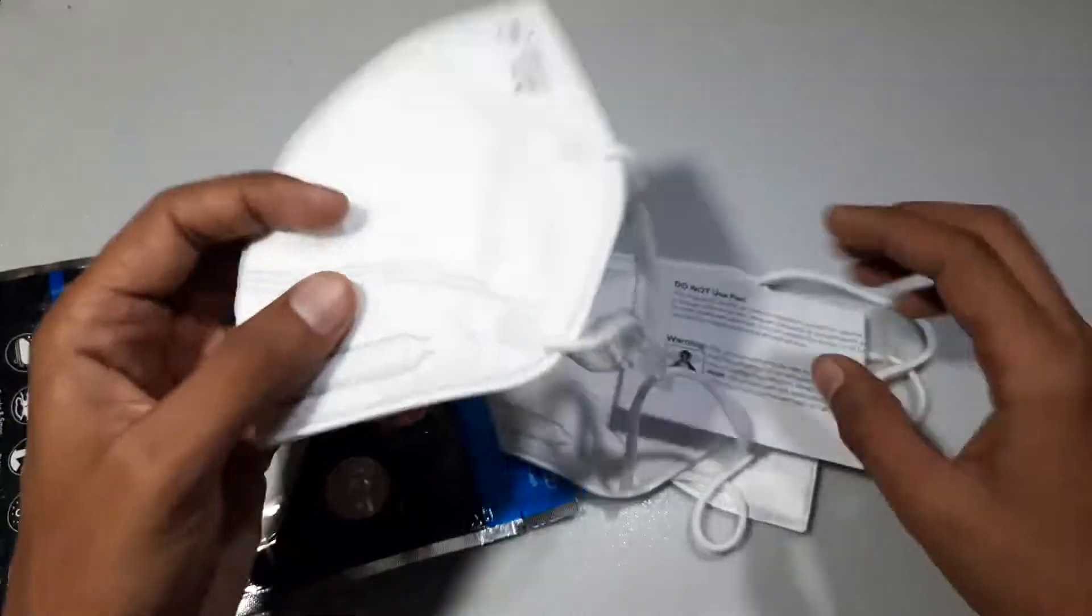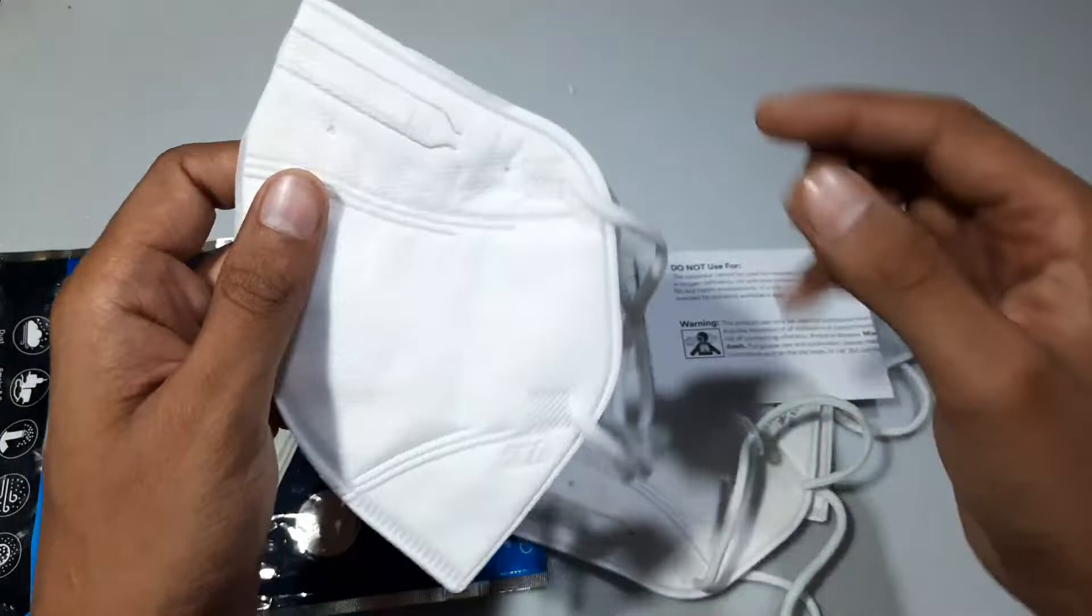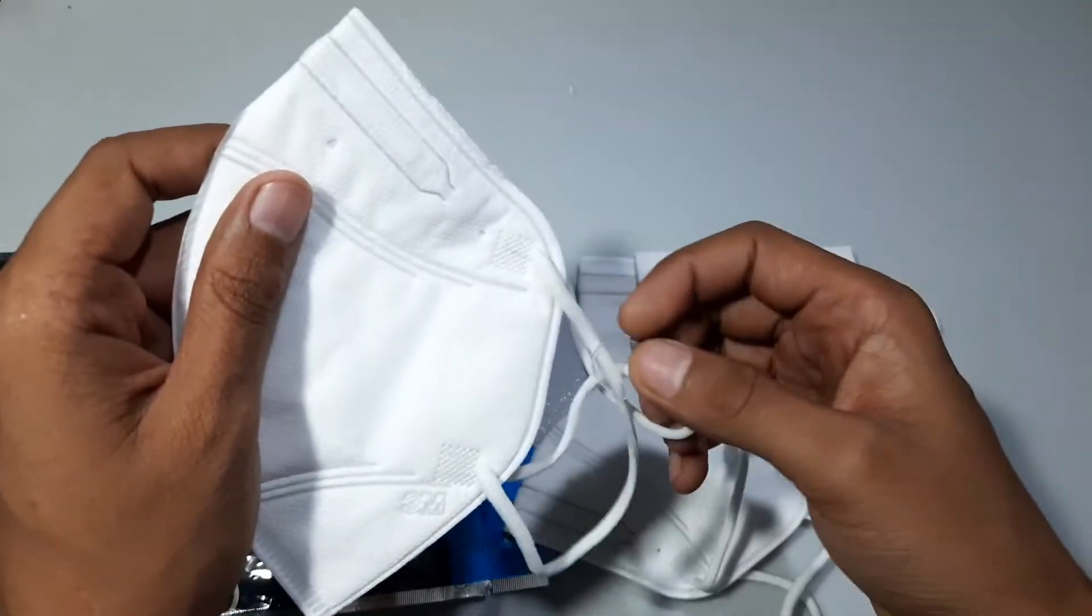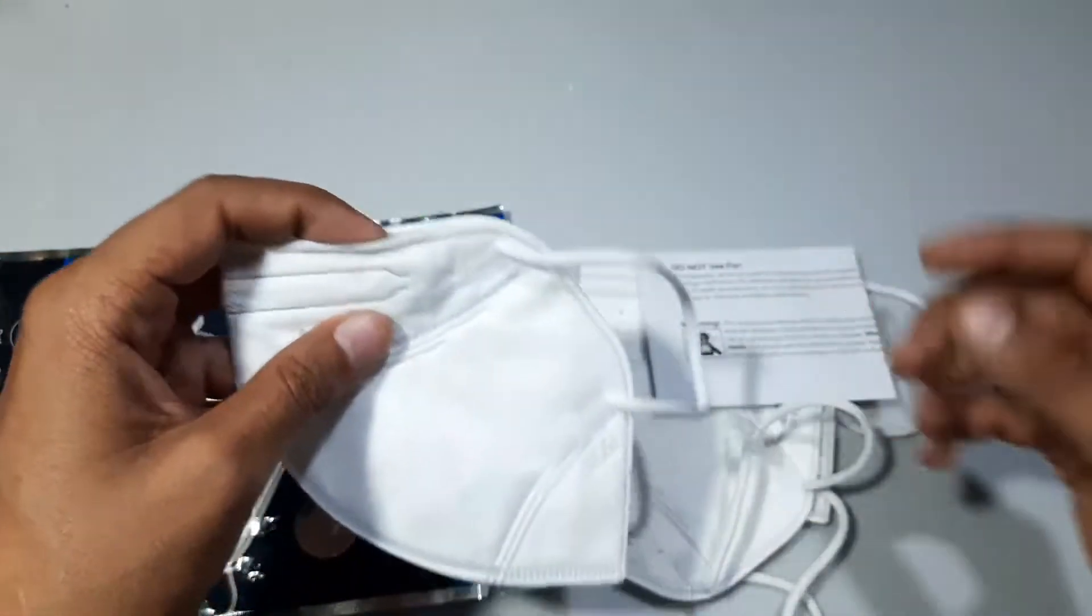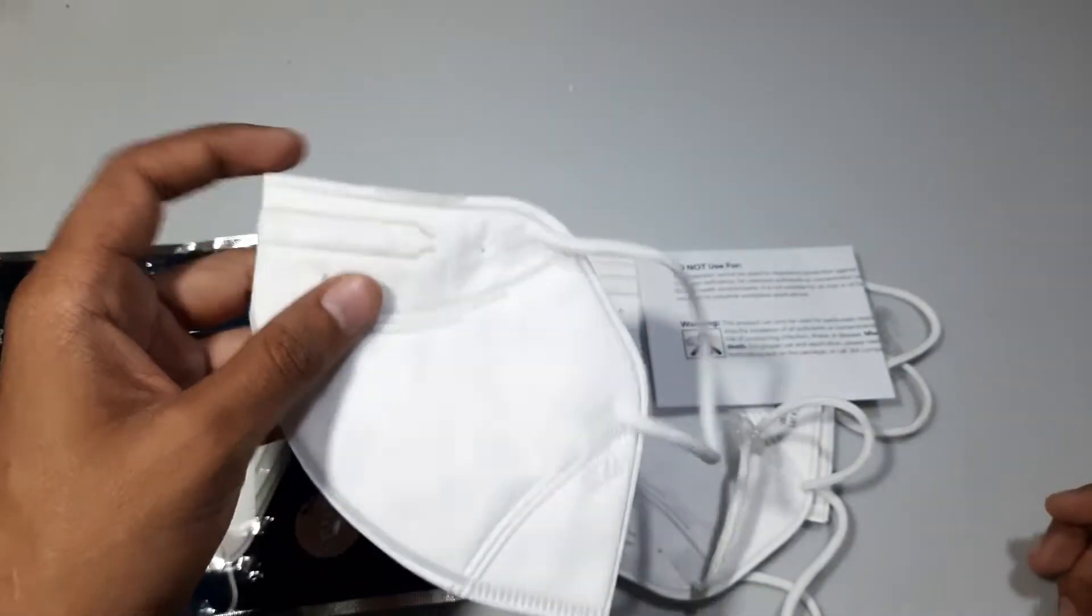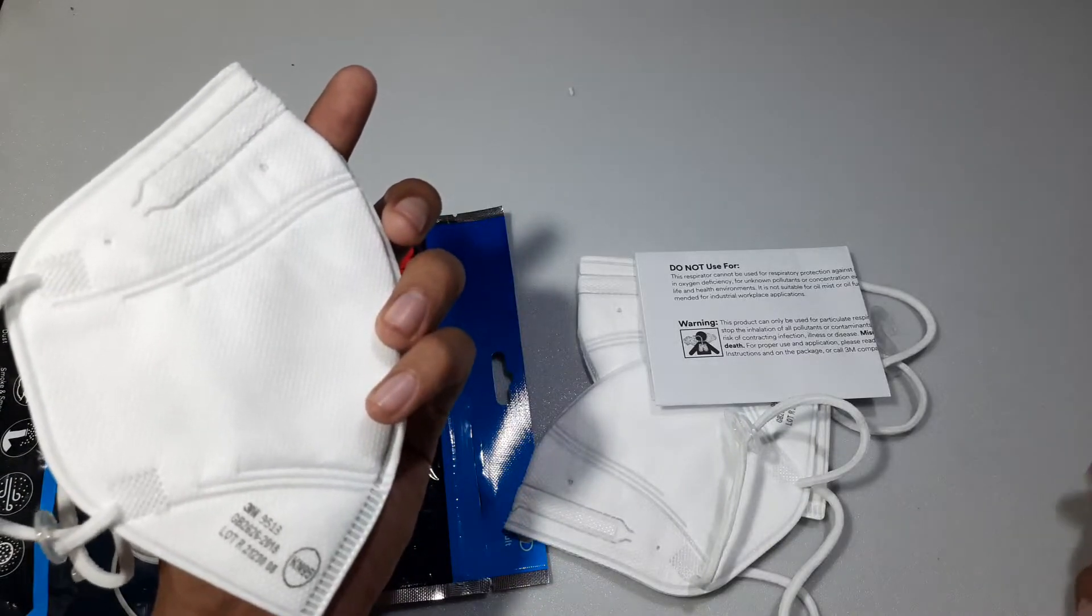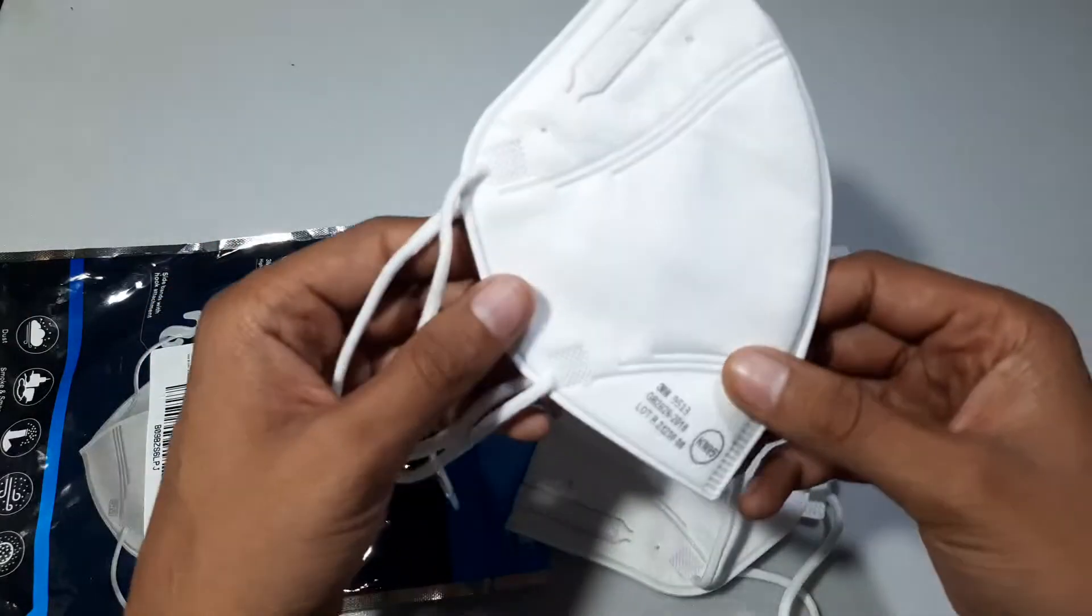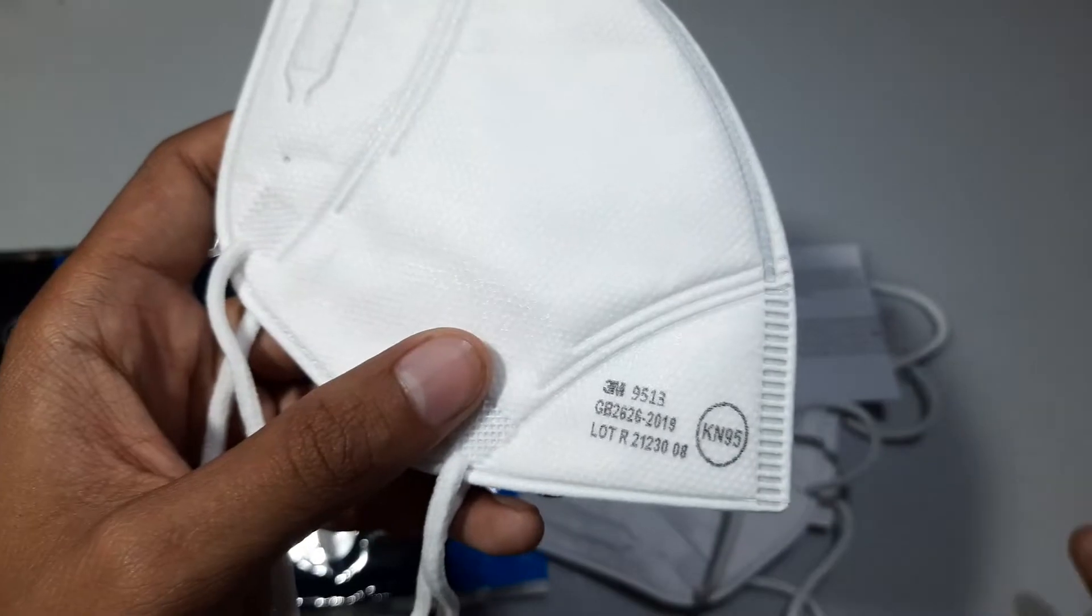These are not your N95 grade masks because N95 masks have headbands. These have ear loops, so these are of Chinese standard. There are different standards: the American standard is N95, the European standard equivalent is FFP2, the Korean standard is KF94, and there is the Chinese standard which is KN95. These filter about 95% of particulates higher than 0.3 microns in size.